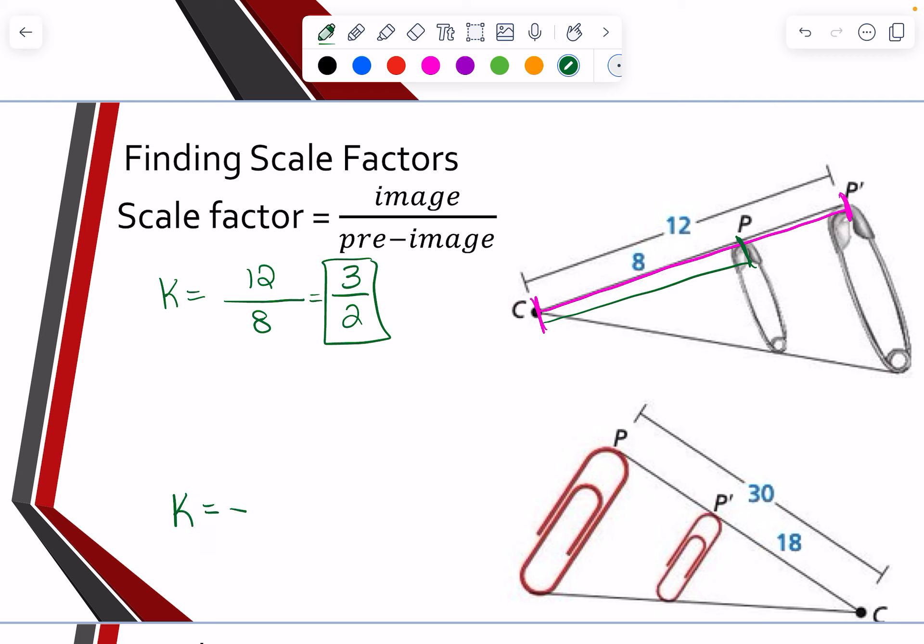Let's come down here to the second one. So again, we want the image value from C to P prime, which would be 18. And then we want the pre-image value from C to P, which would be 30. And when we look at that, 6 goes into both of those. So it would give me a scale factor of 3 fifths.